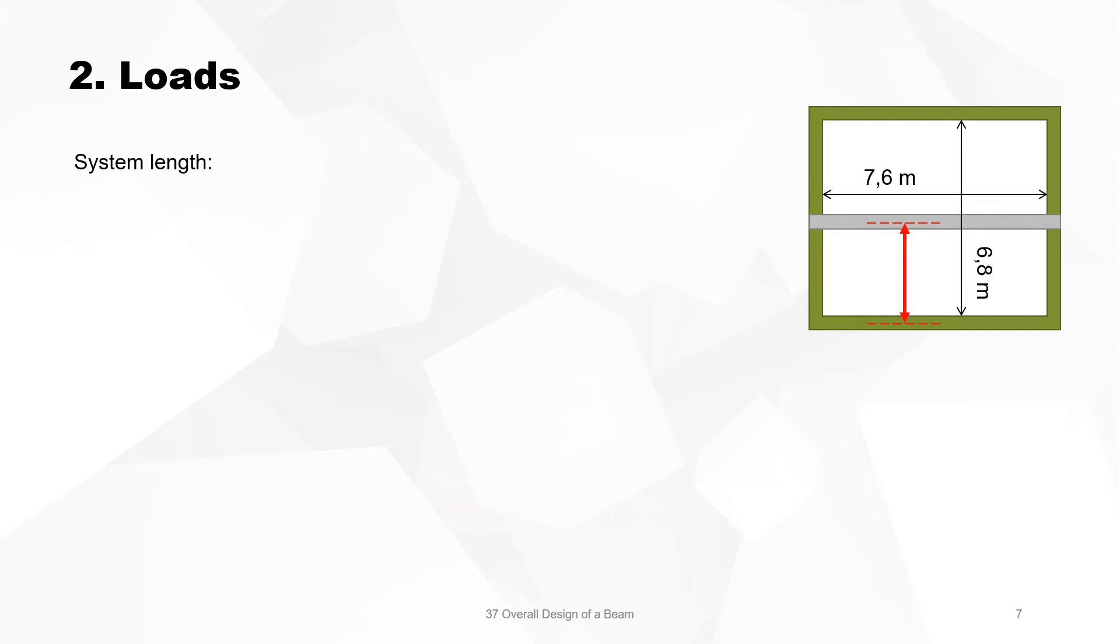Then we go over to step 2, the loads. This is the beam. The system length of the beam is 7.6 plus 0.2 divided by 2 plus 0.2 divided by 2, so it's 7.8 meters. In the other direction, we have the one-way slab, the netto is 6.8, we divide by 2, and then we add 0.1 for this support to it. So it's 3.5 meters.